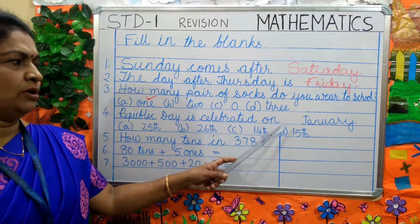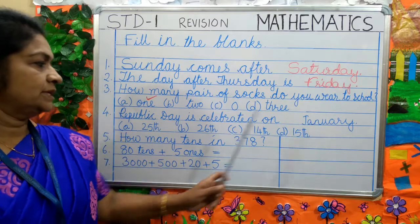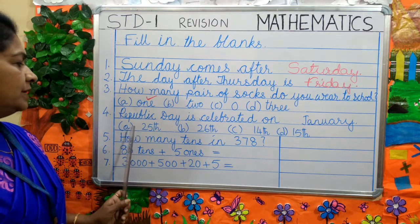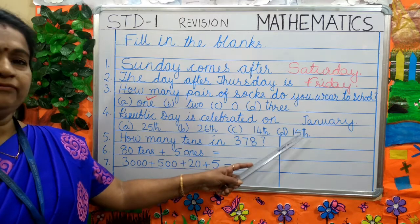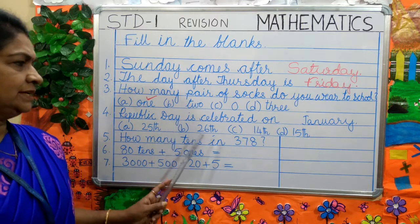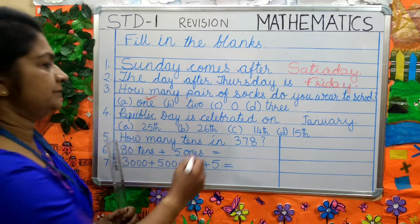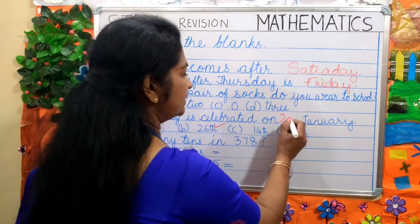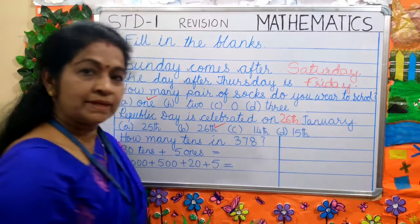Next question: Republic Day is celebrated on dash January. The options are 25th, 26th, 14th, 15th. Children, which is the correct answer? It is celebrated on 26th January. So you will be writing 26th.